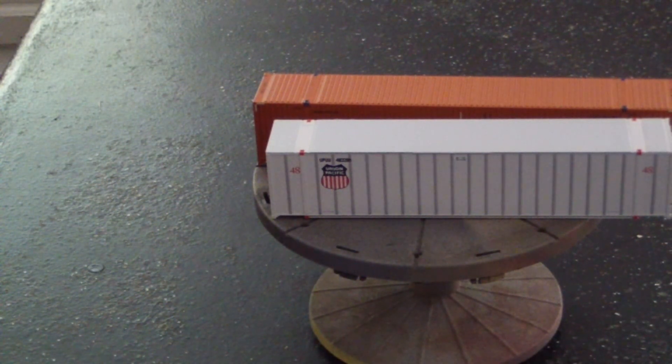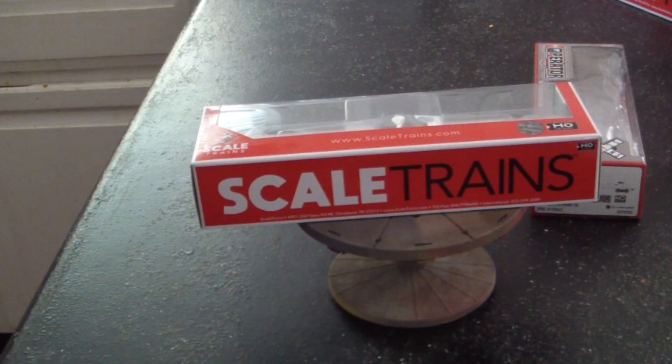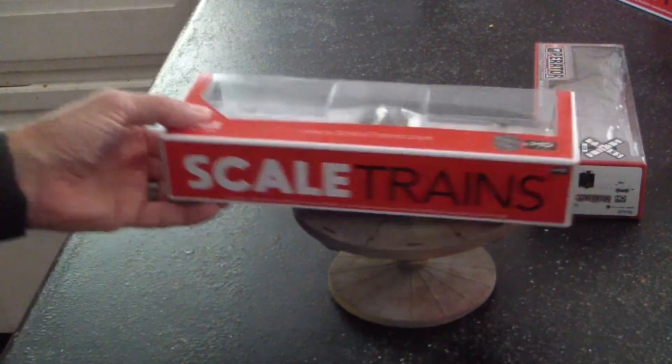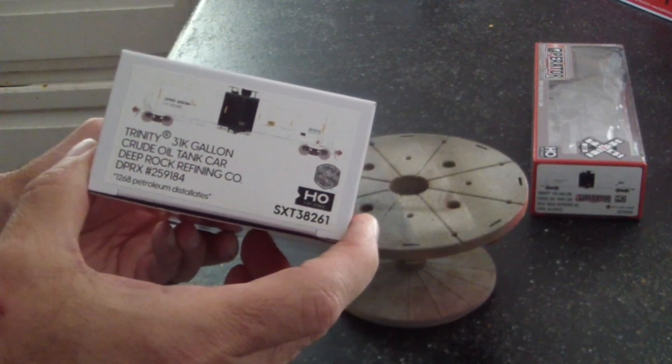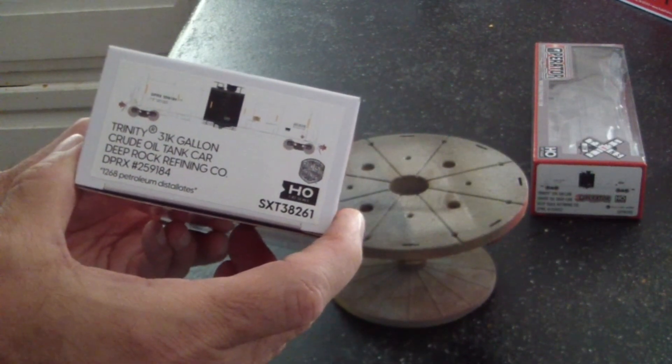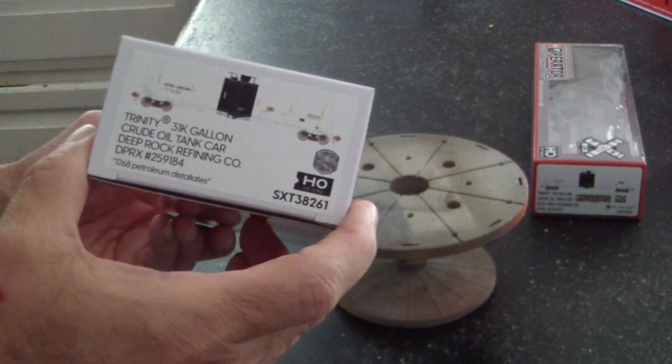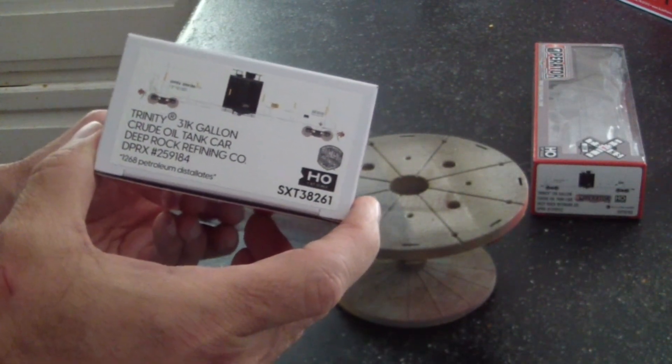Okay, let's go to the tank cars. Okay, we're back. We're going to do the unboxing of the Trinity 31K gallon crude oil tank car Deep Rock Refining Company, and this is in the Rivet Counter.